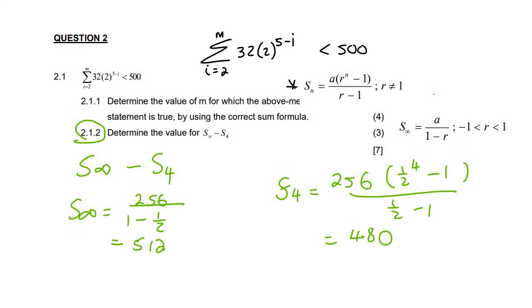And so this is easy. We can now say that the sum to infinity minus the sum of the first four terms is going to be 512 minus 480, and that's going to give us 32.